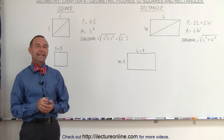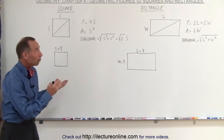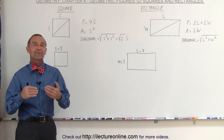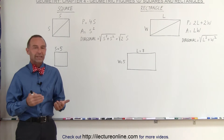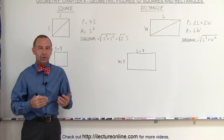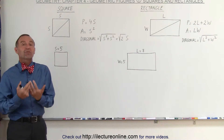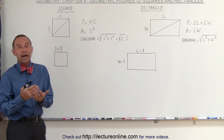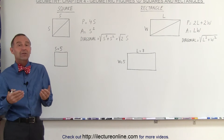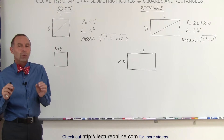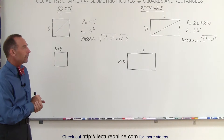Welcome to ElectronLine. In this next set of videos, starting with this one, we're going to be looking at various geometric figures — squares, rectangles, triangles, circles, and so forth — and we're going to talk about the specifics: how to find the area, how to find the perimeter, and in some cases how to find the diagonal and so forth, whatever is specific to each figure we're going to be dealing with.